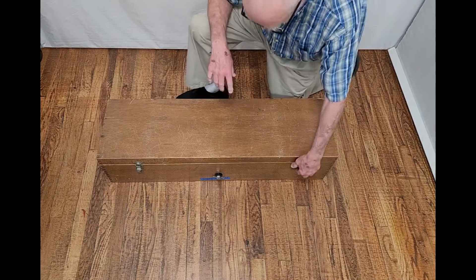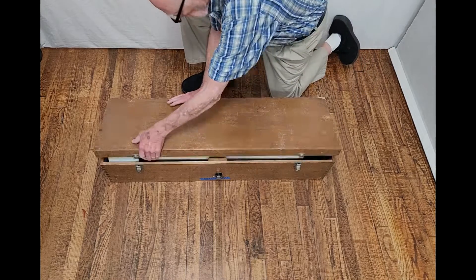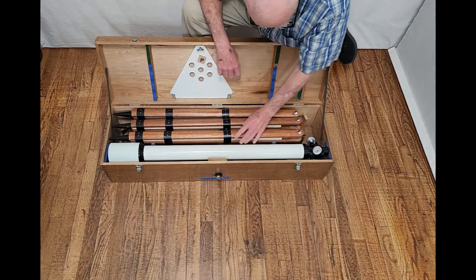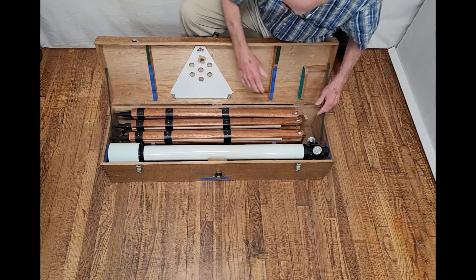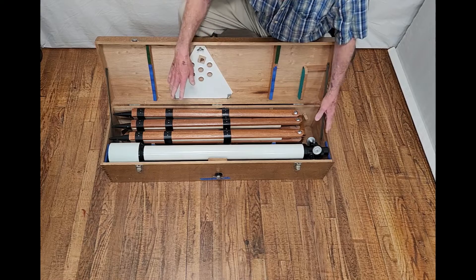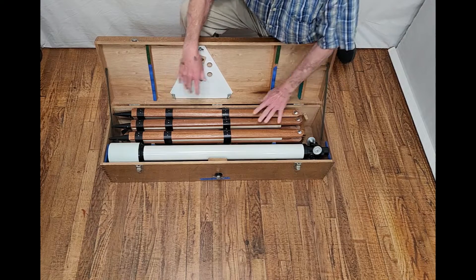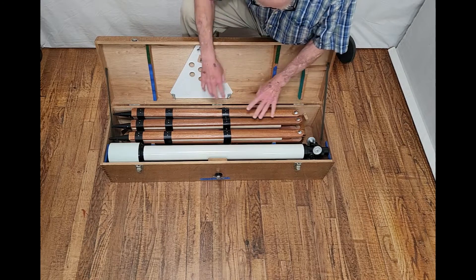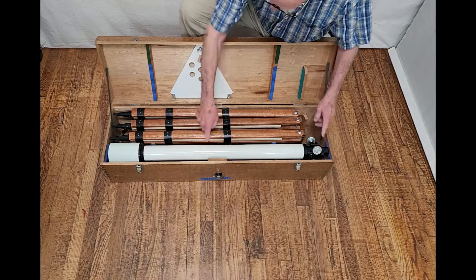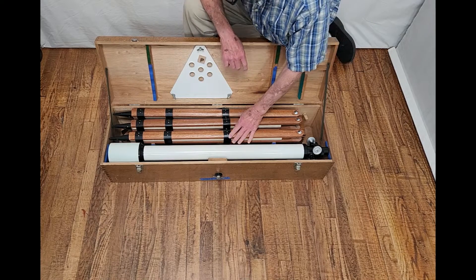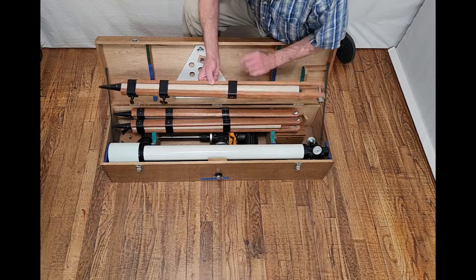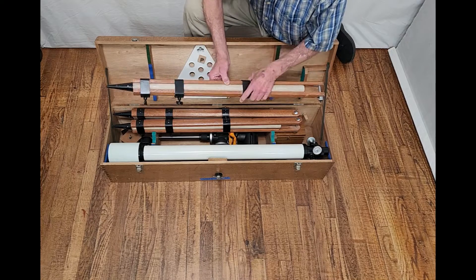Here's how this scope is packed in its box. First of all, this box is a little bit longer than the TS-65, the regular original version. Because although these legs are the same, the telescope OTA is a little bit longer. So these legs are virtually identical to the TS-65 original.